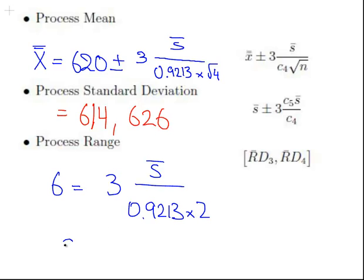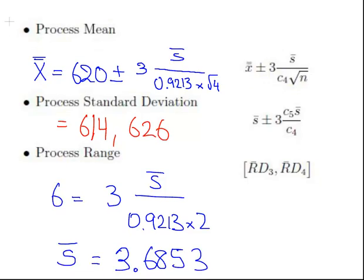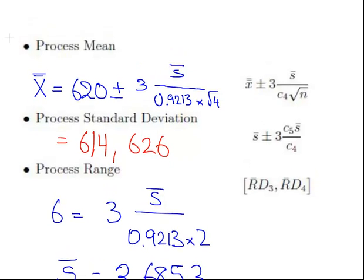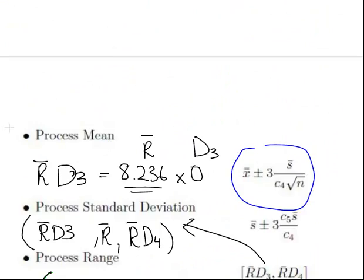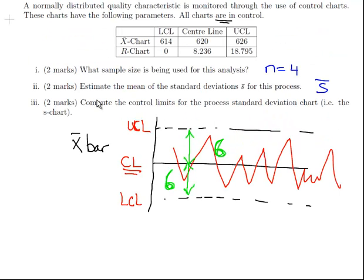We could just figure out what S bar is by rearranging that little equation. What I get here is 3.6853. So that's the answer to the second question we were asked to do.